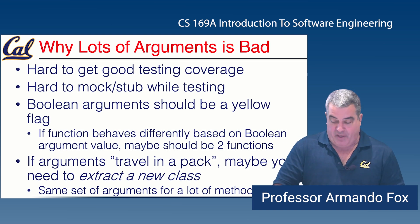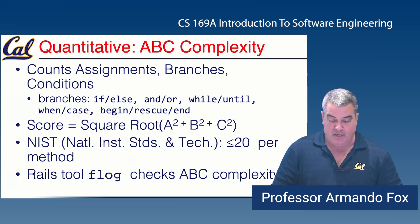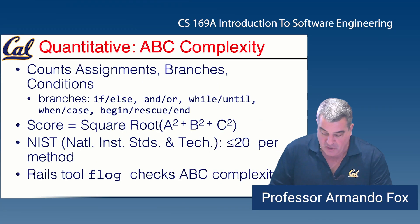What about quantitative measurements of code complexity? A really simple one that's been around for a long time but is surprisingly useful is Assignment, Branch, and Condition complexity — ABC — where you take a weighted sum of the number of assignments, the number of branches defined by certain keywords, and the number of conditions. The typical weighted sum is the square root of the sum of the squares. The National Institute of Standards and Technology has established a recommendation that this value should be less than about 20 for a single function. And yes, there is a tool for Rails that will check the ABC complexity.